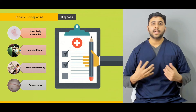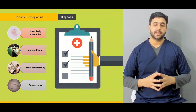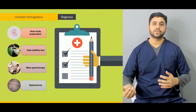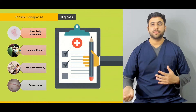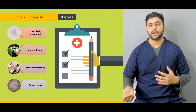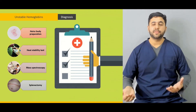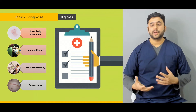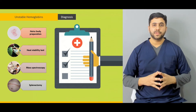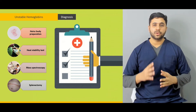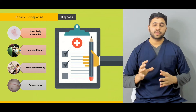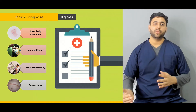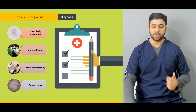Collectively, what are the signs and symptoms that lead us to the suspicion of an unstable variant of hemoglobin in a patient? What are the important diagnostic tools which we have? What are the gold standard tests, and how do they help us in effectively ruling out other abnormalities?